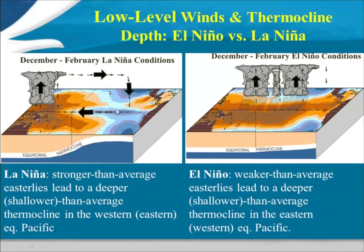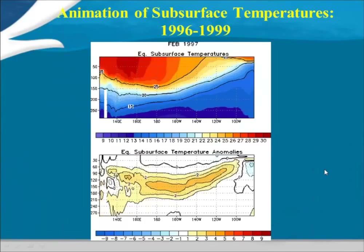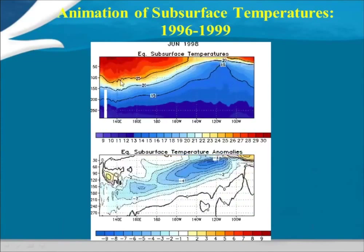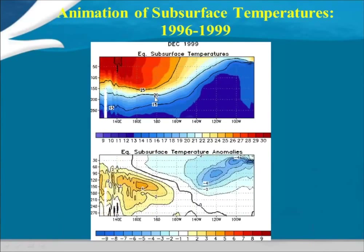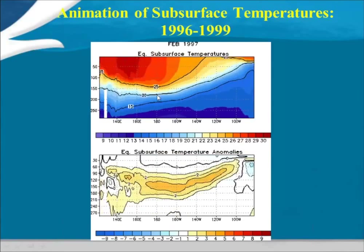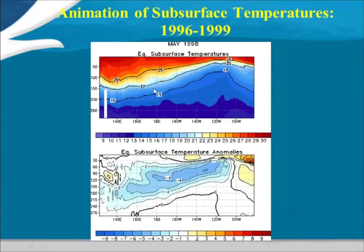The trade winds, which normally blow from east to west across the tropical Pacific, are enhanced during La Niña. You can think of the trade winds as literally pushing water away from the coast of South America and shifting it toward the western Pacific. So stronger trade winds and a shallower thermocline are characteristic of La Niña. During El Niño, you have the opposite: the thermocline is deeper than average, the warmer mixed layer extends across the entire tropical Pacific, and the trade winds are weaker than average — we tend to see westerly wind anomalies.